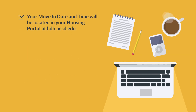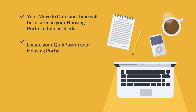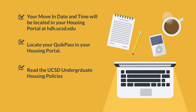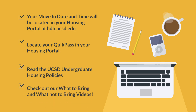Check your move-in date and time, which will be located in your housing portal at hdh.ucsd.edu. Locate your QuickPass in your housing portal, read the UCSD Undergraduate Housing Policies, and check out our What to Bring and What Not to Bring videos.